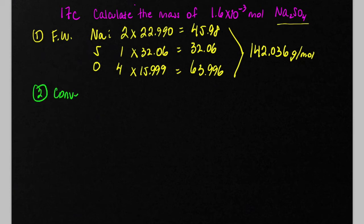Next step we want to do is we want to convert moles to grams. And we use dimensional analysis to help us out with that. So we're starting off with 1.6 times 10 to the minus third moles of sodium sulfate.